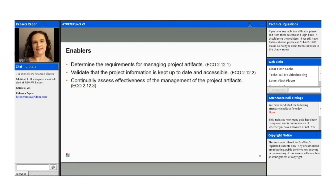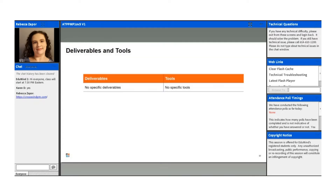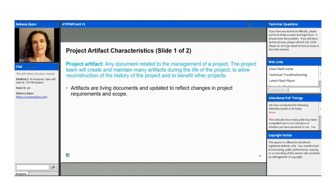In this topic, we're going to talk about determining the requirements for managing artifacts in your project, validating that your information is kept up to date and accessible, and continually assessing the effectiveness of those artifacts. For example, is your status report tailored to the right audience — is it giving the right information to the right person at the right time? There are no specific tools or deliverables in this section.